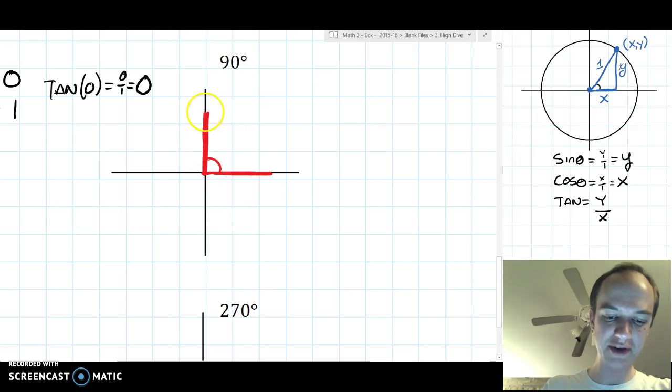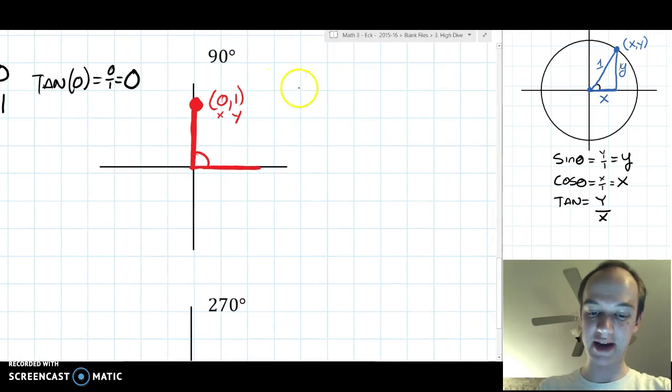There's still no triangle to draw. So let's just pick a point on that terminal side. This time, the point is 0 comma 1 with our x and our y. So using the equations over on the side, sine of 90 has to be 1.